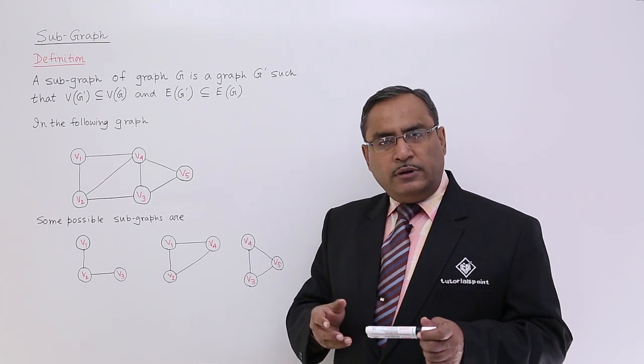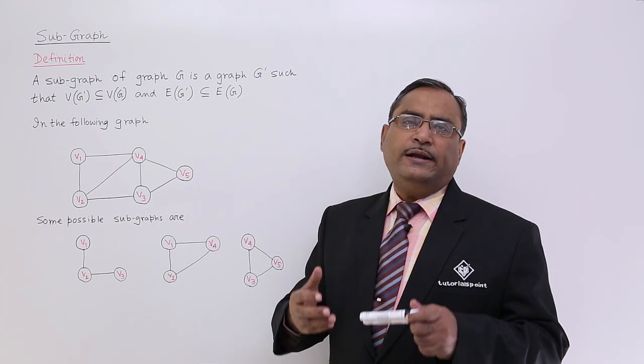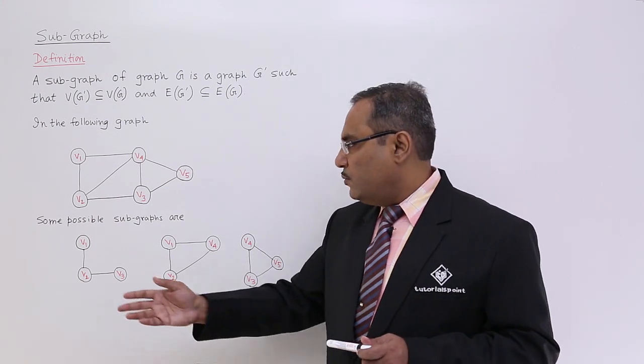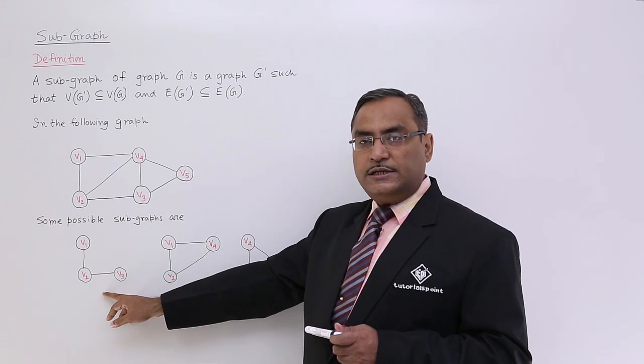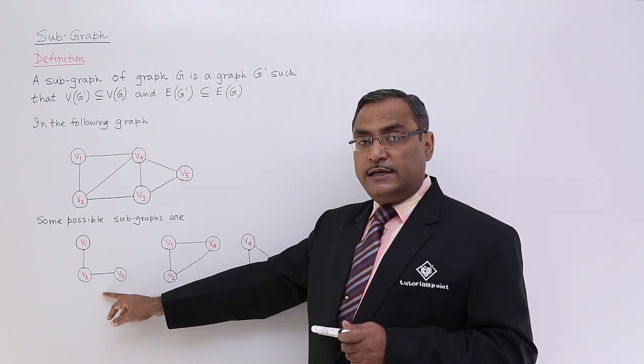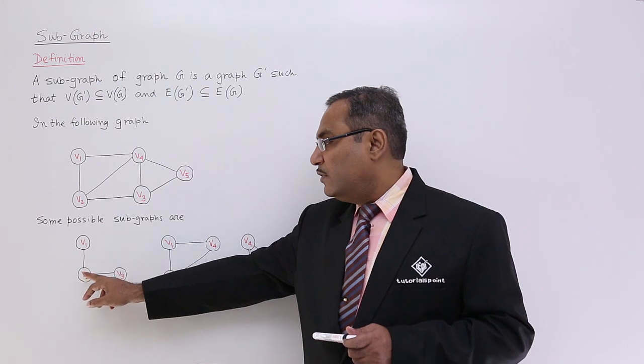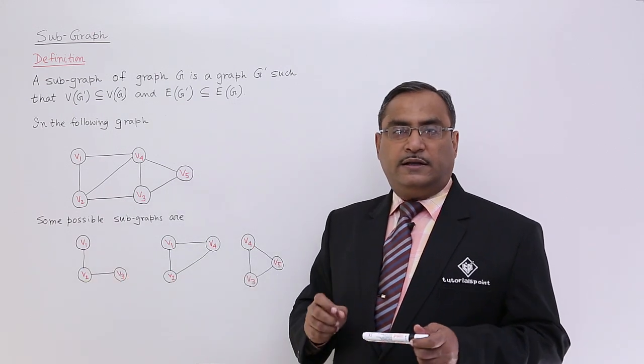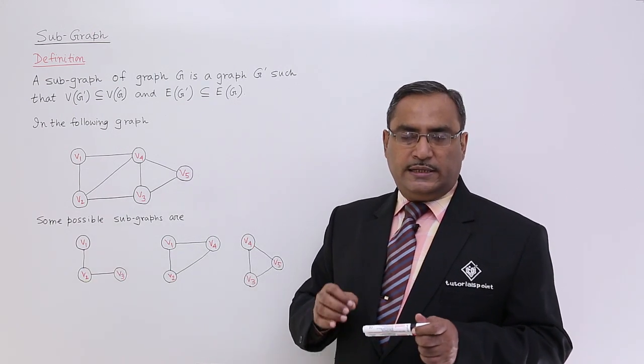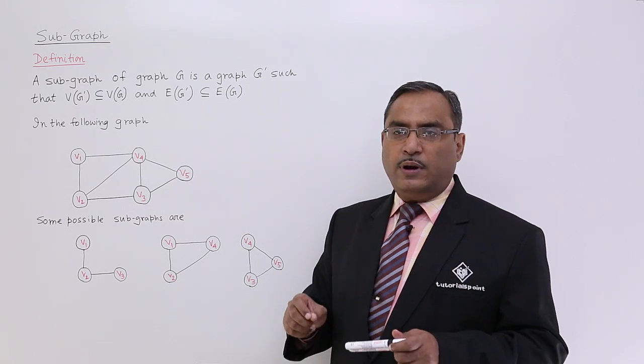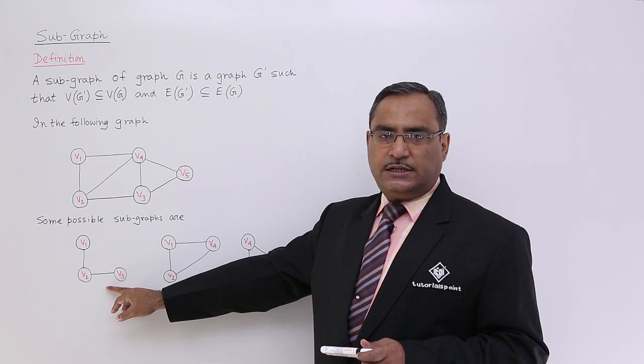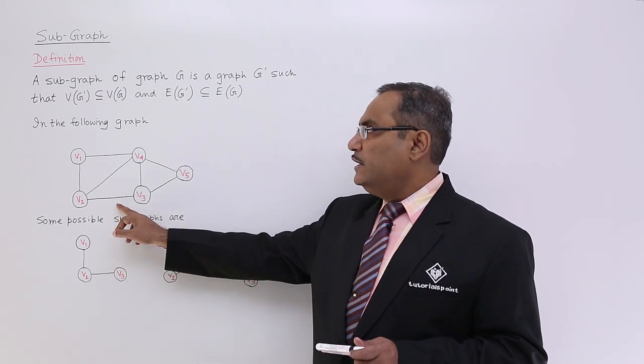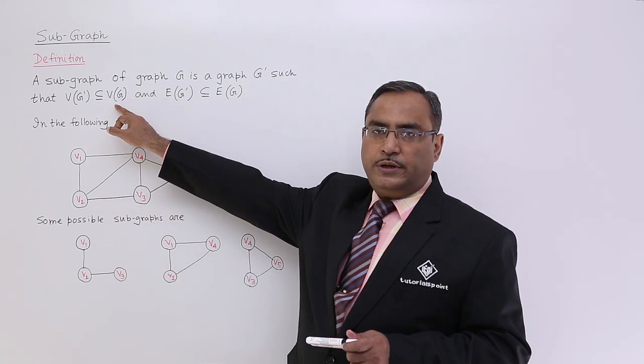To calculate its subgraphs or to find some of their subgraphs, these are the subgraphs of this particular graph. Here you see this is my G'. For this particular G', the V is consisting of V1, V2, and V3. The set of vertices V' is consisting of V1, V2, and V3. Obviously, this V(G') is a subset of V(G), and it has been shown here.